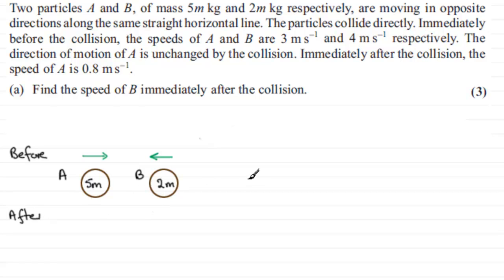We're told that the particles collide directly. Immediately before the collision, the speeds of A and B are 3 meters per second and 4 meters per second respectively. So that means A is moving at 3 meters per second towards B, and B is moving at 4 meters per second towards A.